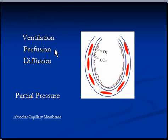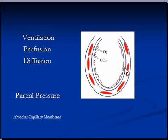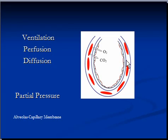Before we try to understand those terms, we need to understand what ventilation, perfusion, and diffusion are, and also what partial pressure is. This is a sketch of an alveolus — the functional unit of the lung. Each lung is made up of millions of alveoli, balloon-shaped structures. This is the lining of the alveoli, made up of pneumocytes type 1 and type 2 cells. Type 2 cells produce surfactant.